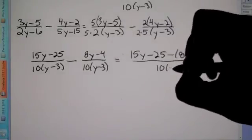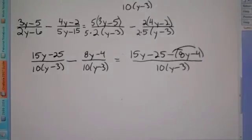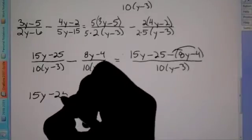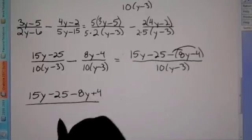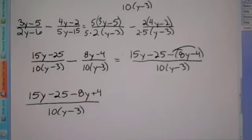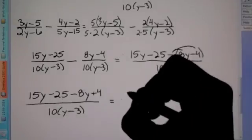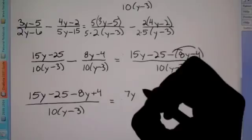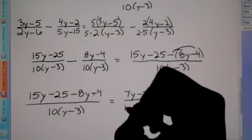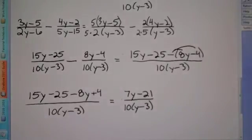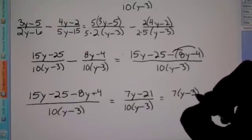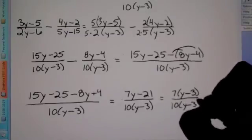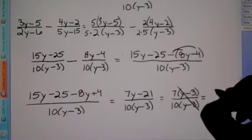So now we can write it as one denominator. When you distribute, we have 15y minus 25, and that ends up negative 8y. Negative times negative is a positive 4, over 10 times y minus 3. Combining like terms: 15 minus 8 is 7y, and negative 25 plus 4 is negative 21, over 10 times y minus 3. Now we can factor out a 7 from the top, which leaves y minus 3. On the bottom we have 10 times y minus 3 — these cancel out, so the final answer is just 7 over 10.